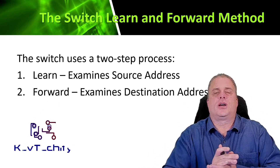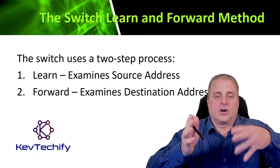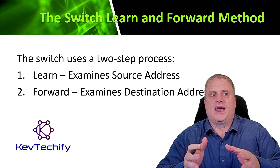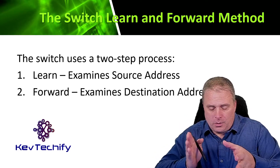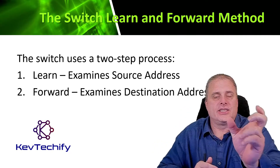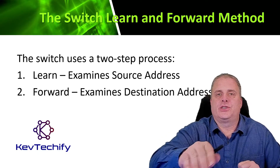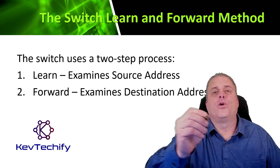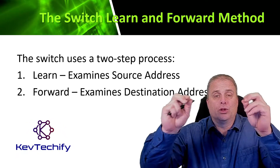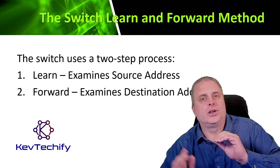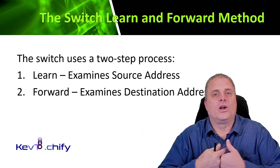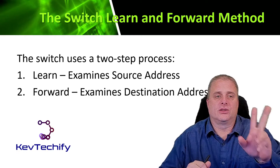The switch uses a two-step process to forward packets, called the Learn and Forward process. The first step is learning: it adds the source MAC address to the table if it's not already there. When a packet comes into the switch, it notes the source MAC address from the frame header and adds it to the address table associated with the incoming port. Then for forwarding, it looks at the destination MAC address from the frame header — if it's in the MAC address table, it forwards out the corresponding port; if not, it floods out all ports except the one it came in on.